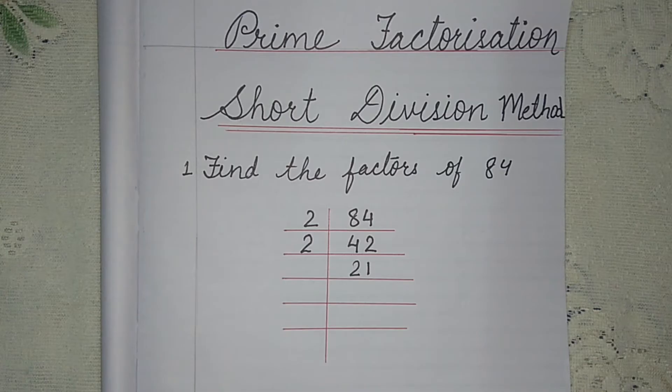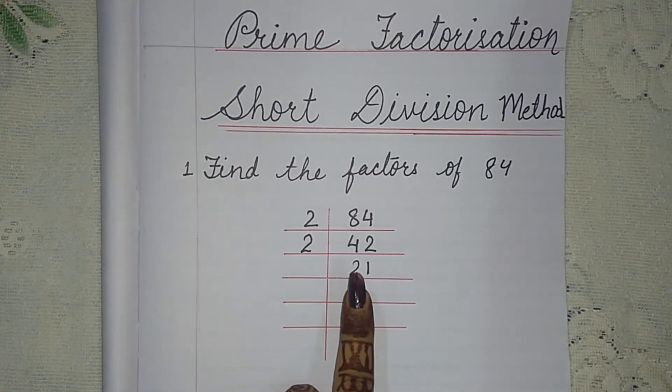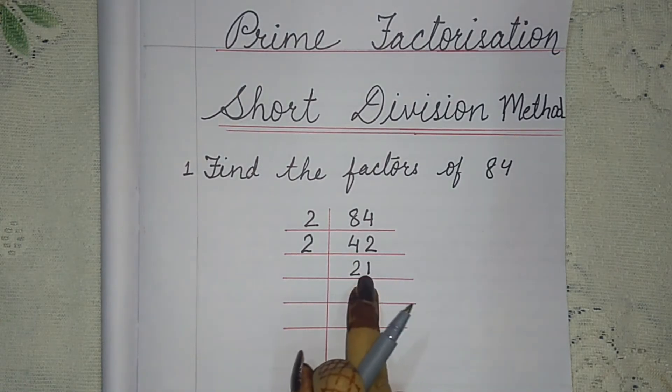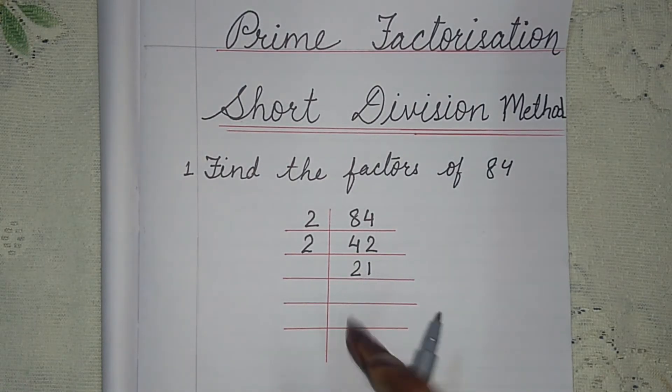If we look at that method, then 2 plus 1 is 3. Three means it can be divided by 3. This means 21 will be divided by 3.